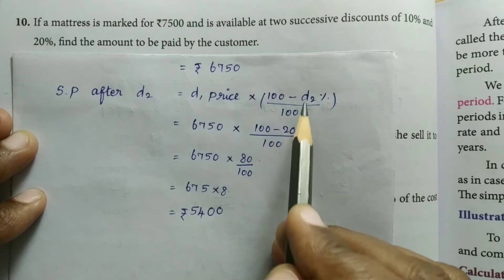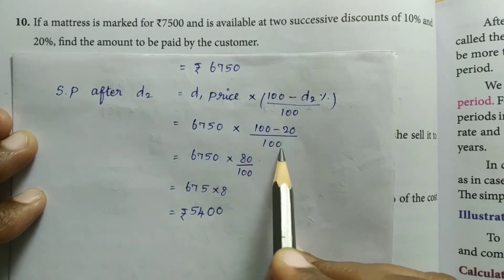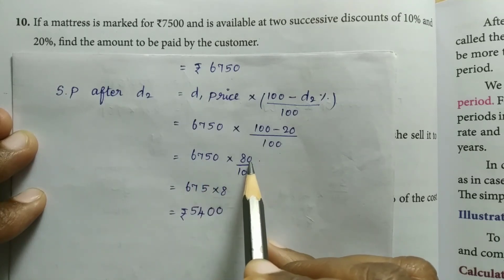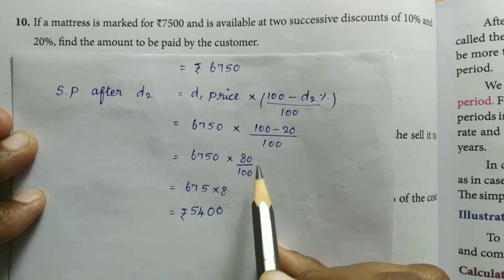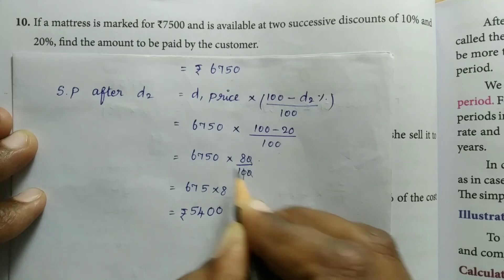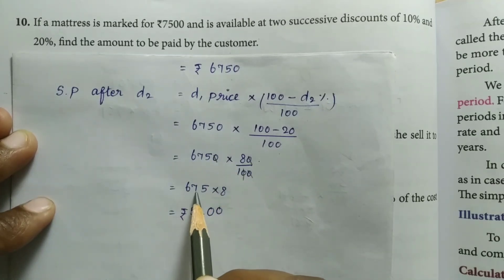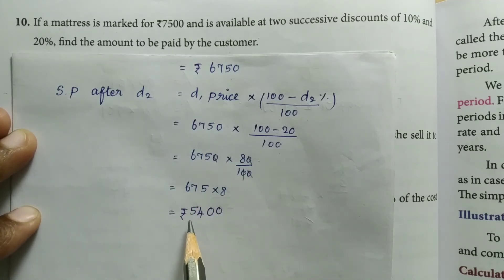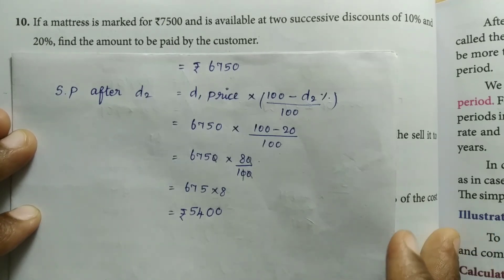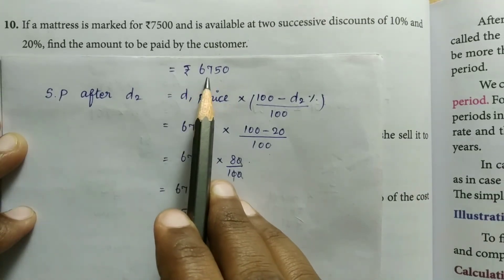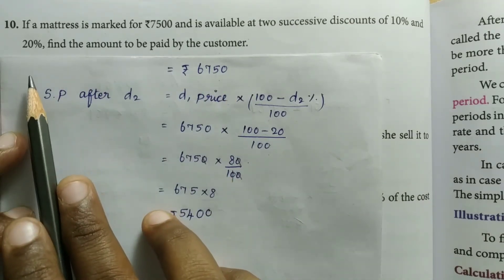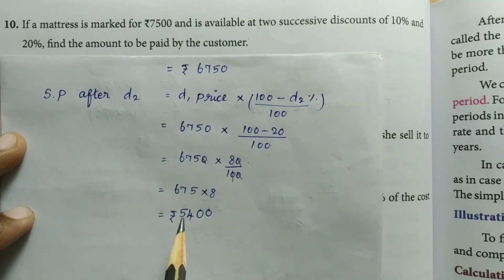So, 6,750 × (100 − 20) ÷ 100 = 6,750 × 80 ÷ 100. Cancelling zeros, we get 675 × 8 = 5,400. After both successive discounts, the first discount gives Rs.6,750 and the second discount of 20% gives a final selling price of Rs.5,400.